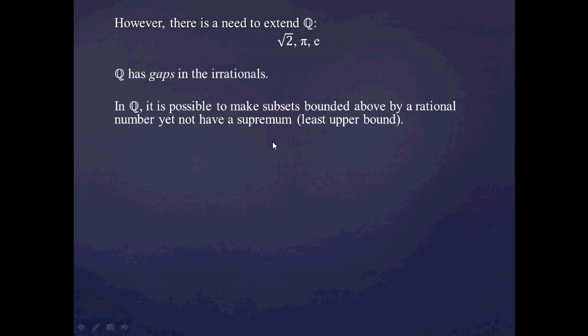You can do similar arguments with pi and e — you can give rational number bounds for what these values are going to be, assuming you can write them down exactly. Besides having gaps at the irrational numbers, the set Q suffers from another shortcoming: it's possible to make subsets of Q which are bounded above by a rational number, yet not have a least upper bound.